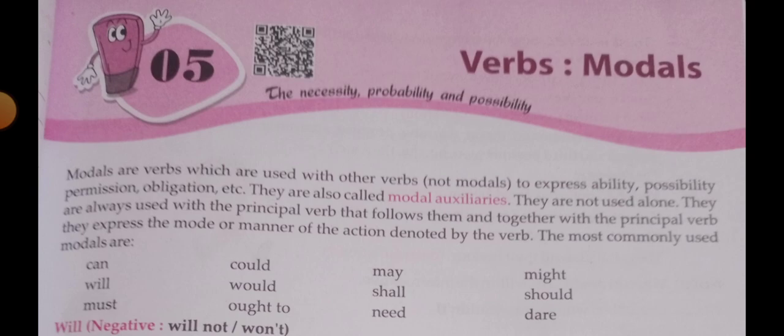Might — negative is 'might not' or 'mightn't'. Might is used to express less possibility than may: 'It might rain' has less possibility than 'It may rain.' Might is considered half-negative. To express permission: 'Might I start the discussion?' To express doubt: 'That might be the driver.'